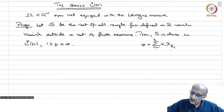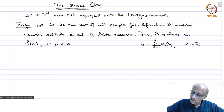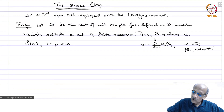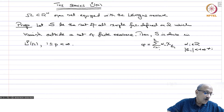The e_i's can be taken disjoint and the alpha_i's are real numbers. We say the function vanishes outside a set of finite measure means the Lebesgue measure of e_i is finite for all i. Outside the union of e_i, phi is 0, so it vanishes outside a set of finite measure.